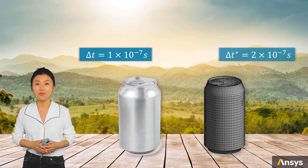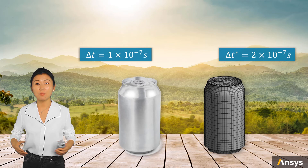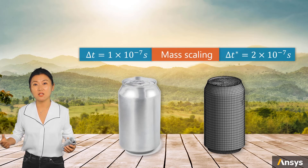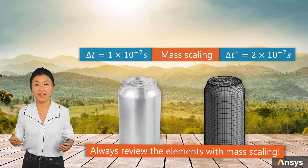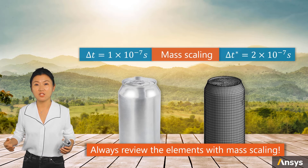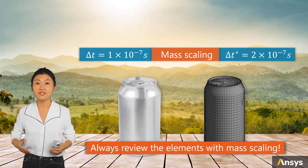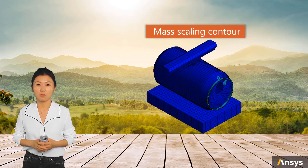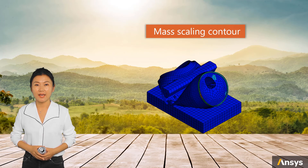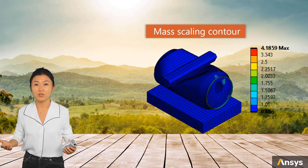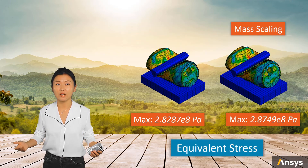You should always check how many elements are affected by mass scaling. If all elements are scaled by a large number, the accuracy of the analysis is mostly lost. Here is the mass scaling factor contour plot for the can crash problem. In this case, very few elements are affected by mass scaling, and the scale number is reasonable — the largest value is about 4 times the original density. The results from mass scaling are very close to the original results.